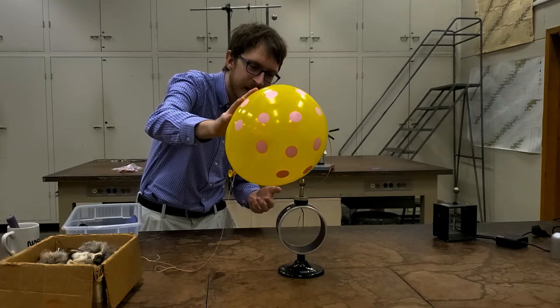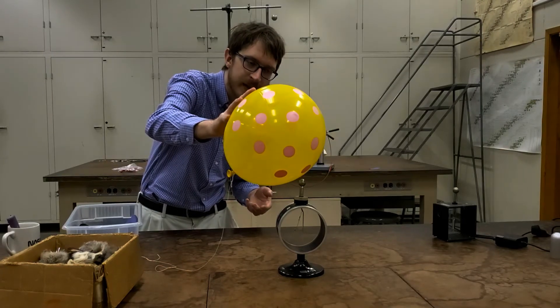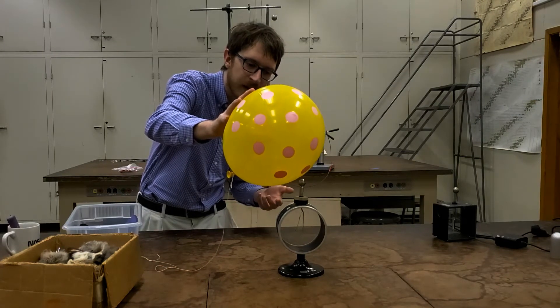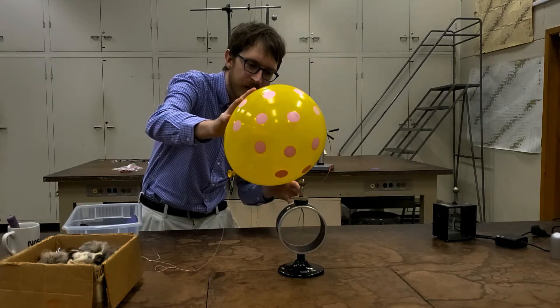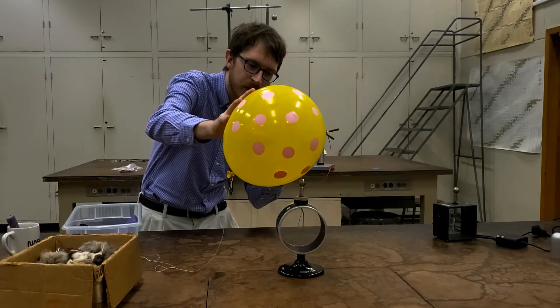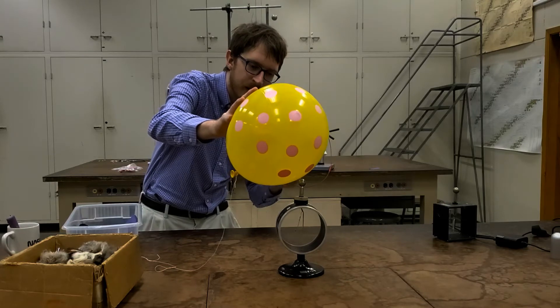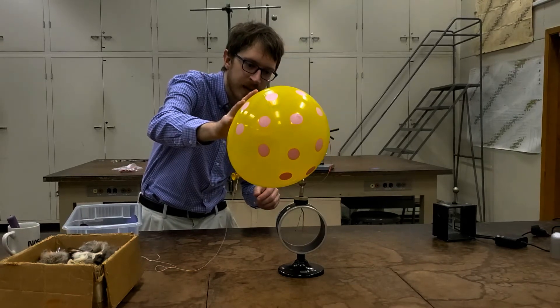And this is not because there's a net charge placed on this electroscope, it's because the charge has been separated. Positive charge within the electroscope has been attracted upward toward the ball on the top, and negative charge is repelled down to the bottom.